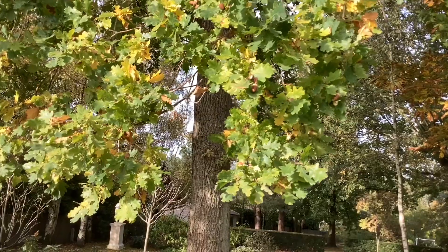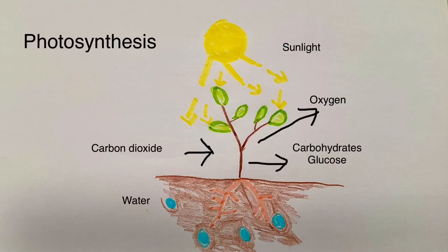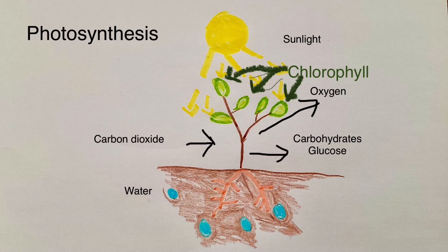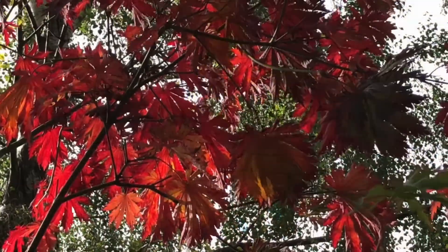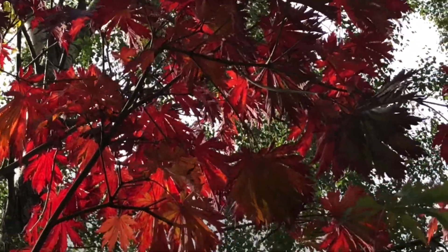That means they charge the tree like a battery during summer when the days are long and there's lots of sunshine. You may have heard about this process before — it's called photosynthesis. When you look at my drawing, you can see that the chlorophyll in the leaves uses carbon dioxide from the air and water through its roots and turns it into energy. This then charges the tree and also creates oxygen which we breathe. So trees are doing a very, very important job.